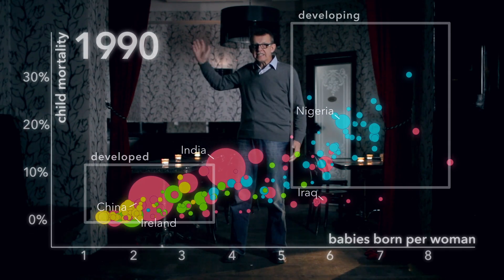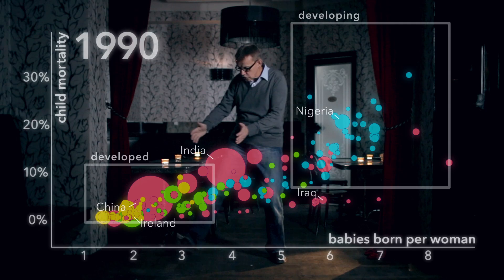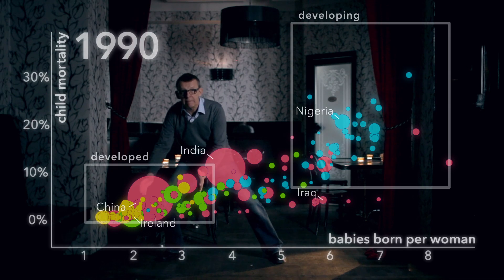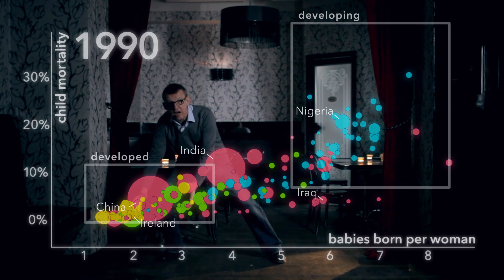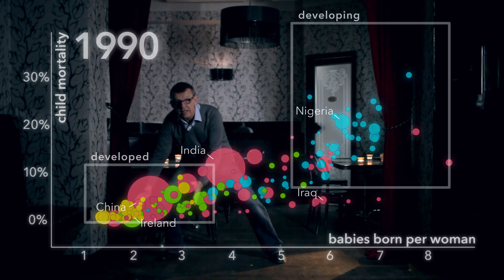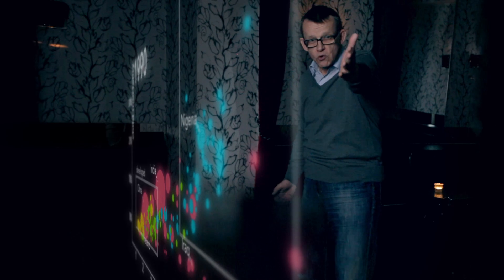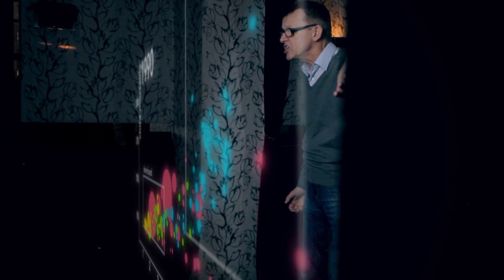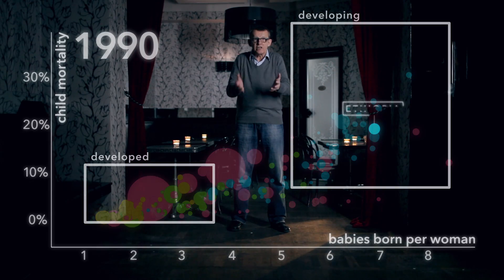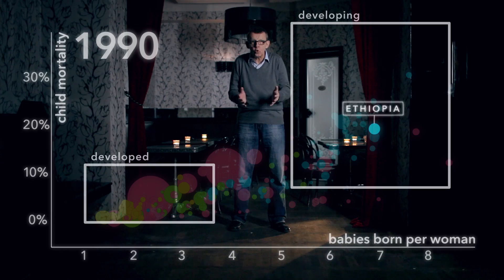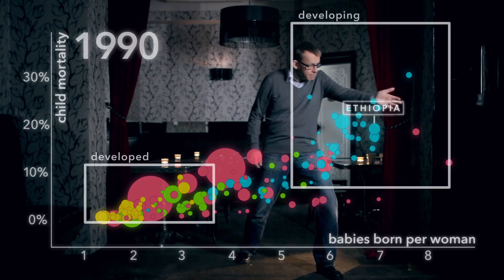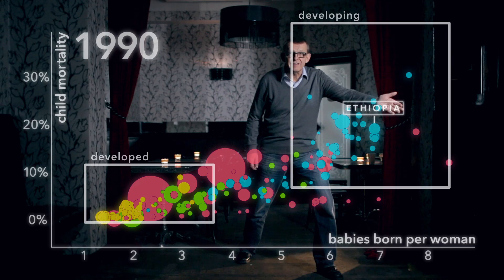And that enabled them to invest more time and resources in each child. By 1990, some of the so-called developing countries had already made it down here. Some were in between. And a few remained up here with very high child mortality. Ethiopia had hardly moved at all.